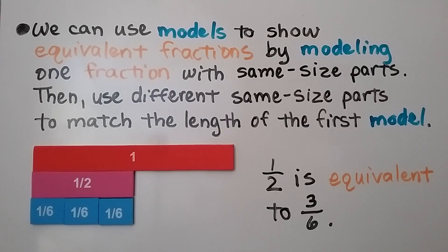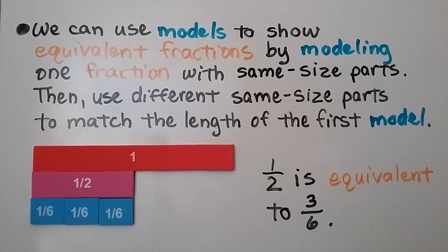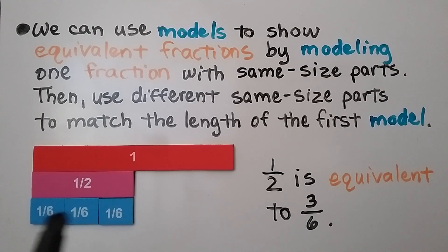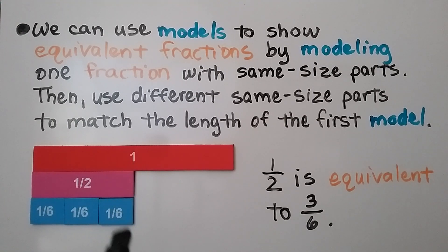We can use models to show equivalent fractions by modeling one fraction with the same size parts, then use different same-size parts to match the length of the first model. Here we have one whole in red, and this is half. We have three one-sixths pieces and it's the same length as the half, so one-half is equivalent to three-sixths.